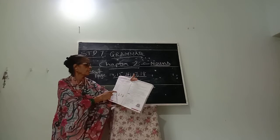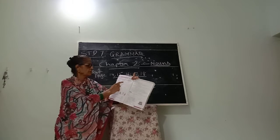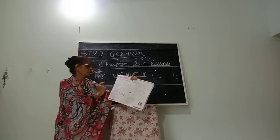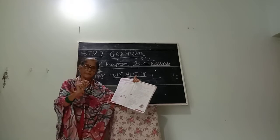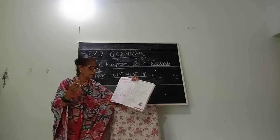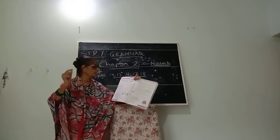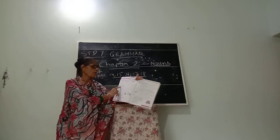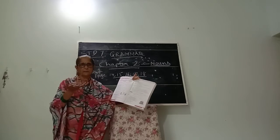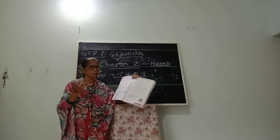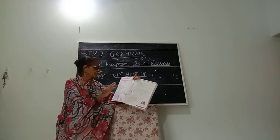They have given the five kinds here: common, proper, material, abstract and collective. Now proper nouns are names of particular — special — places, persons and objects. For example, John. Everybody's name is not John, it is a special name. Then Delhi, Chennai.